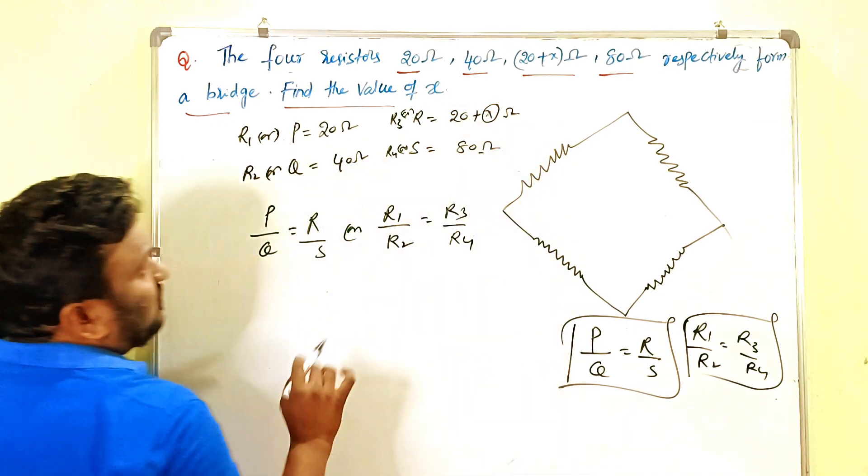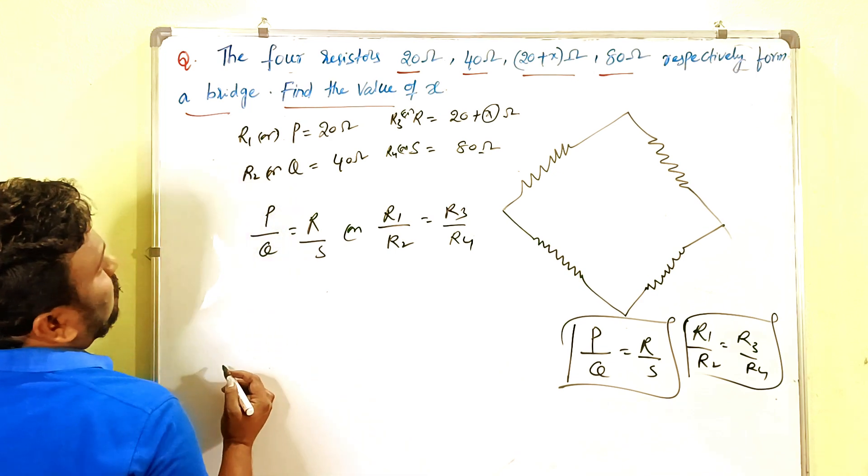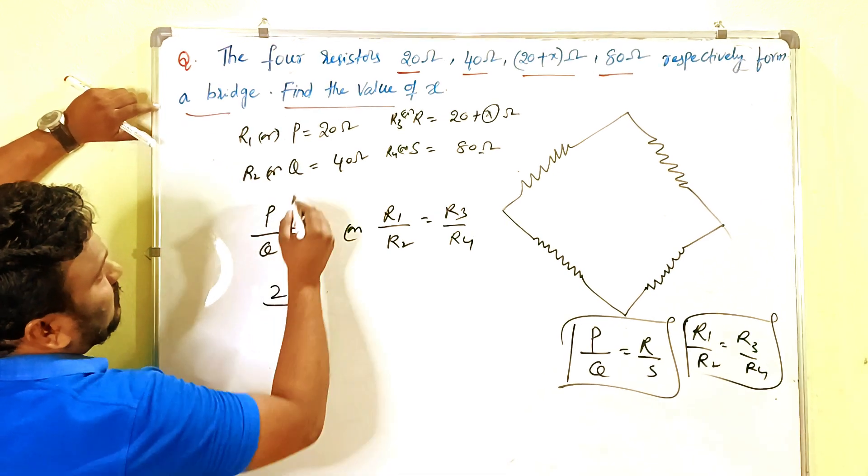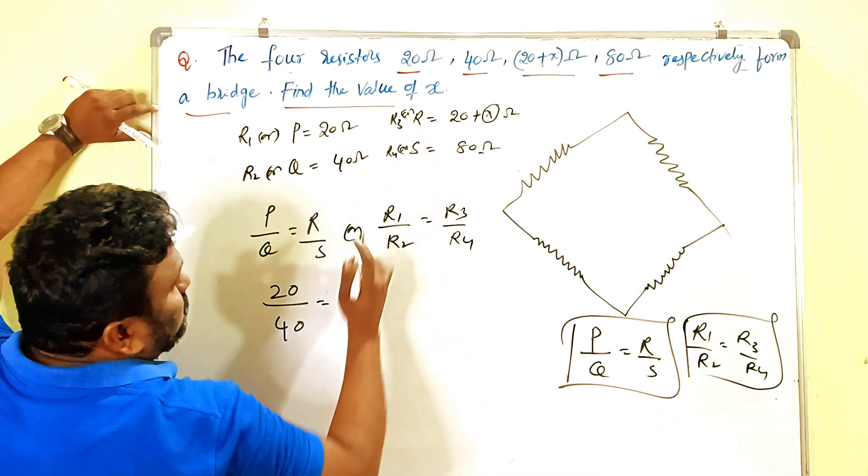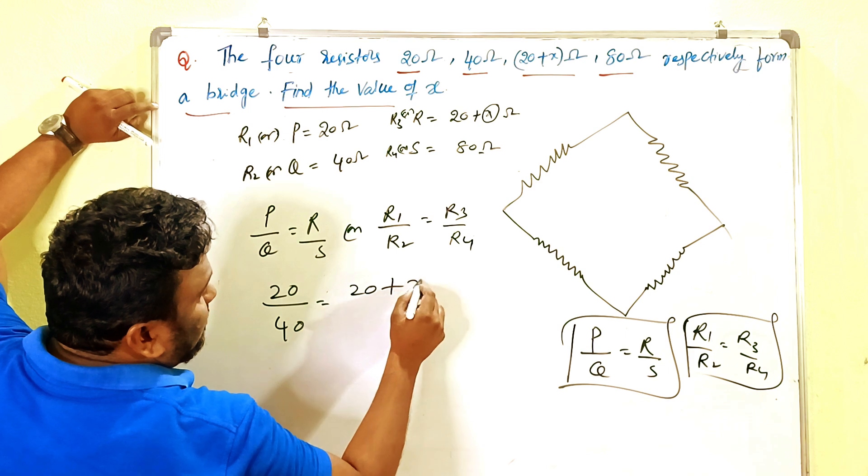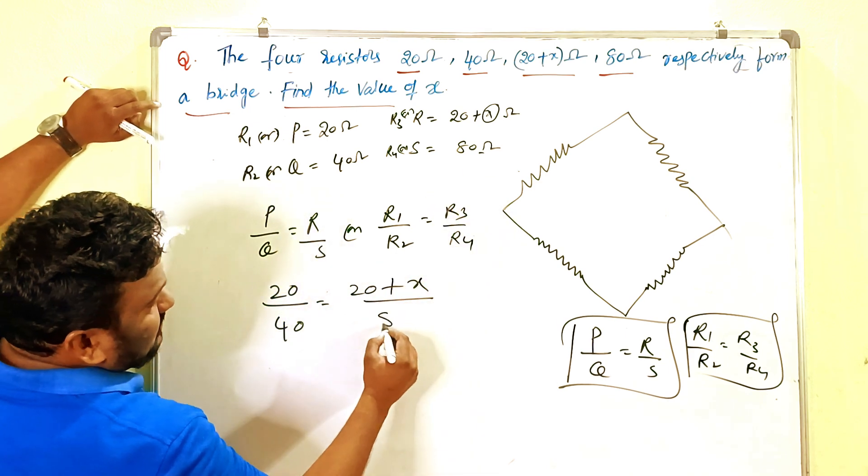By using this relation we have to find out this X value. Very simple. What is P? P is 20 ohms. And Q is 40 ohms. And R is 20 plus X. And R4 is 80.